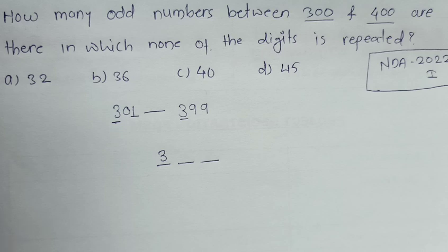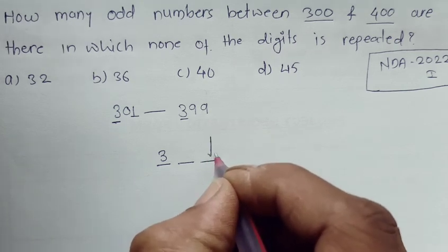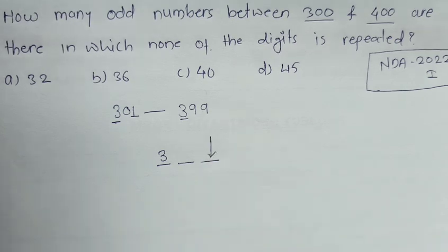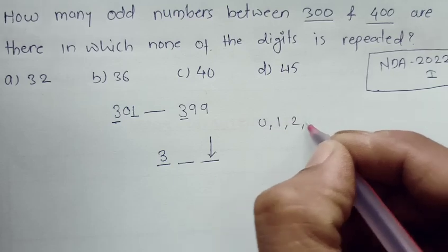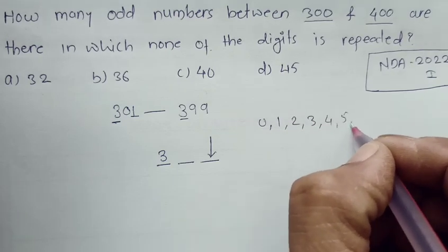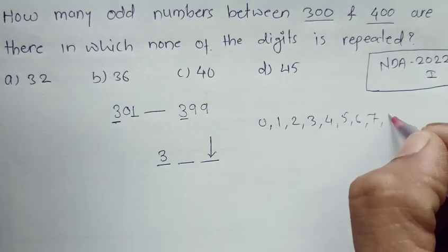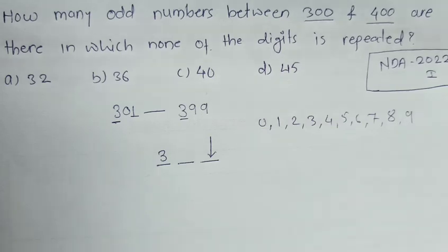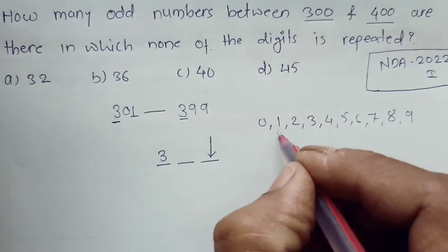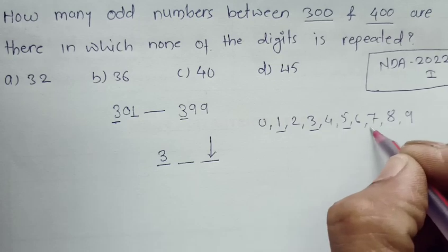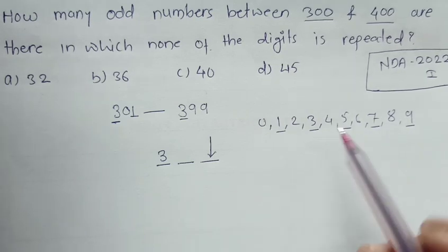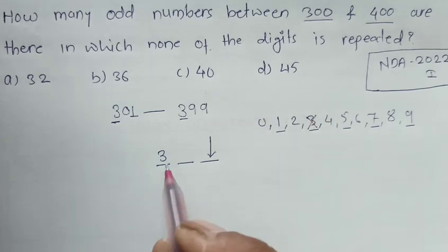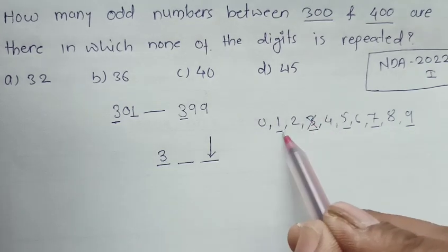Now the condition is on the units place. This units place should be an odd digit. So how many odd digits do we have? From 0, 1, 2, 3, 4, 5, 6, 7, 8, 9, we have 1, 3, 5, 7, and 9 as odd digits. Out of which I have already used this 3 here, so we have now 1, 2, 3, 4 - only four options at this place.